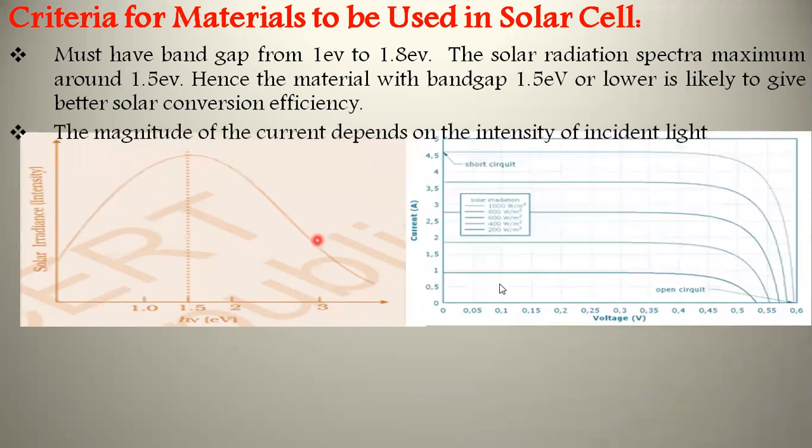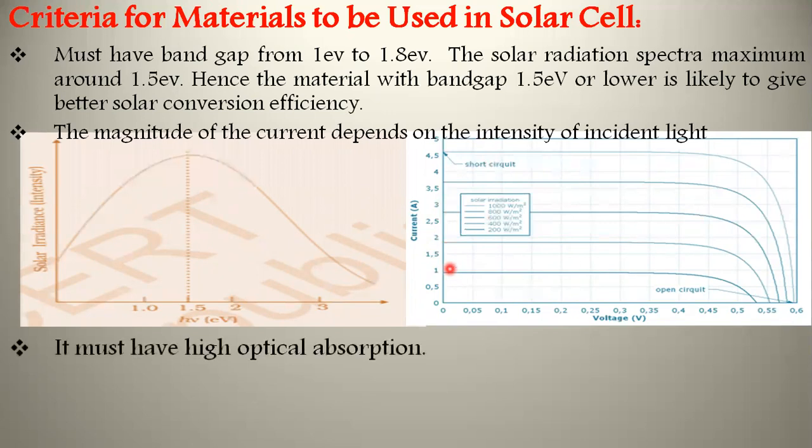Coming to the irradiation effect on photocurrent, obviously irradiation increases the photocurrent. From this diagram, you can observe that photocurrent keeps increasing with respect to solar radiation. It starts from 200 watts per meter square and ends at 1000 watts per meter square. As solar radiation increases, the photocurrent also increases.